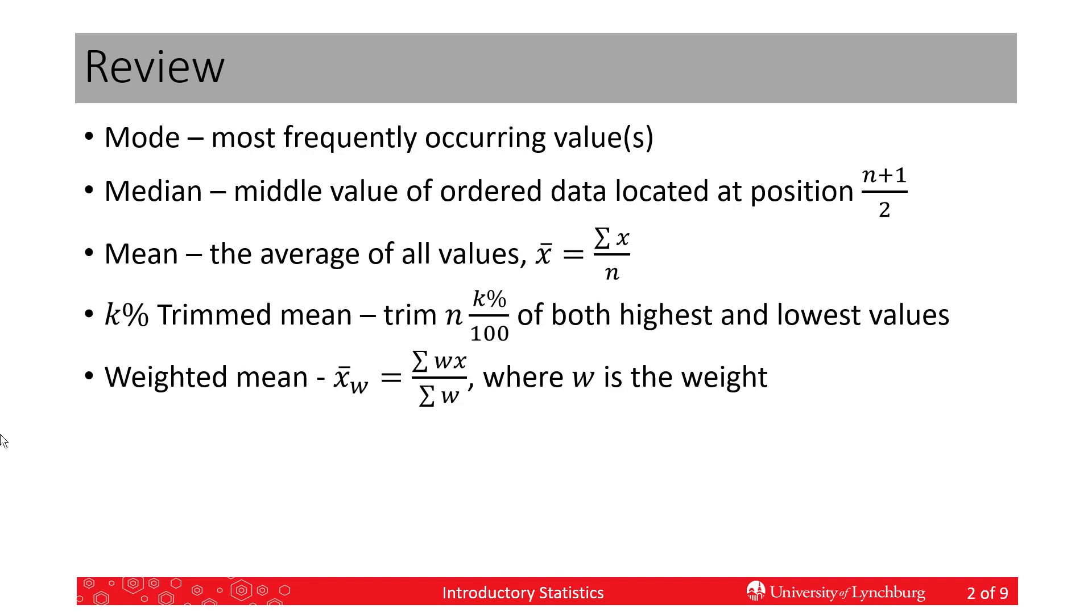A weighted mean is where we give different weights to each of the values. We take each weight times the value and multiply those. After we've multiplied them, we add them all up and divide by the total of the weights.